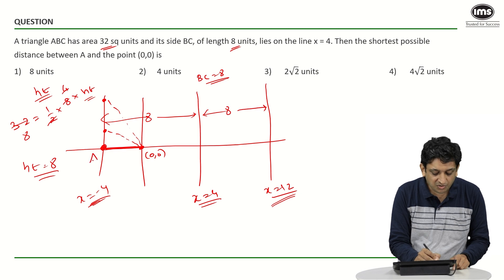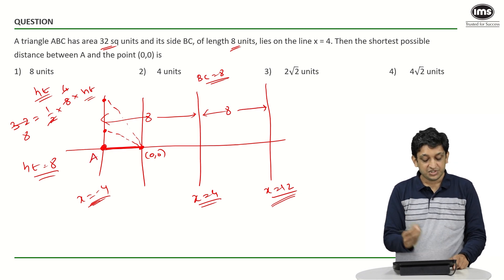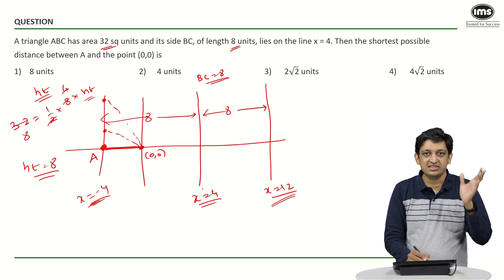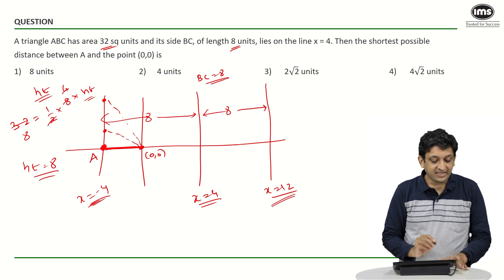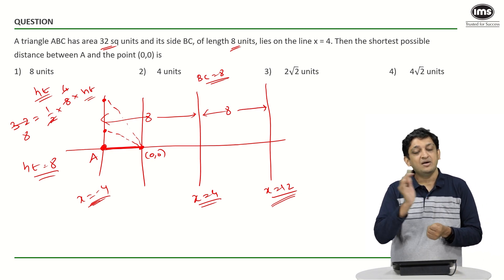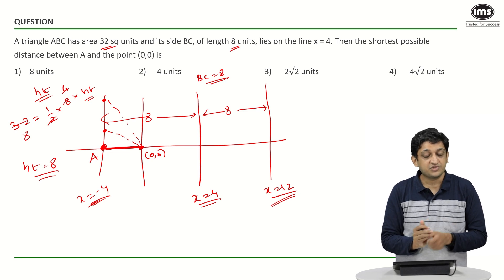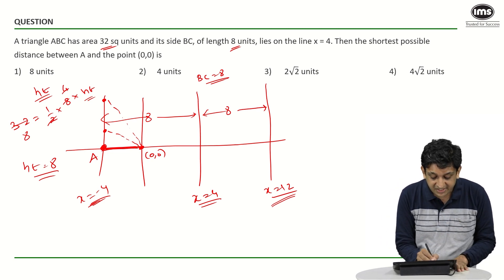That is why it would be in our best interests to put A here. So A will be present here, B and C will be present somewhere on this line - it does not matter. We have to find the distance between point A and point (0,0) or the origin.